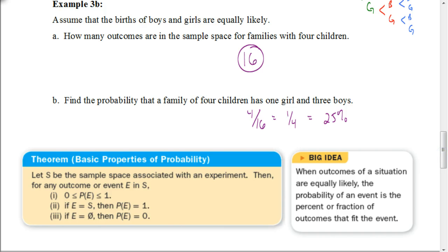Here is some basic information about probabilities you should be aware of. The probability of any event is always greater than or equal to zero and less than or equal to 1. You'll never have a negative probability and never have a probability greater than 1. If the event equals the sample space, the probability is 1 — meaning it will happen 100% of the time. If the event is impossible, the probability is 0.